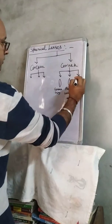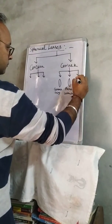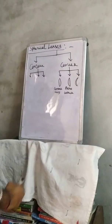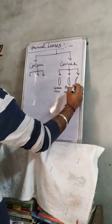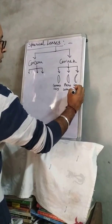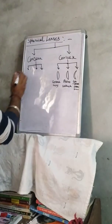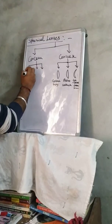And the last is... this is concave or convex. Concave or convex lens, right.